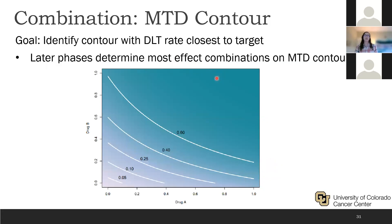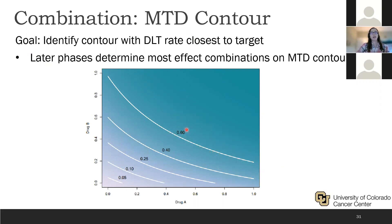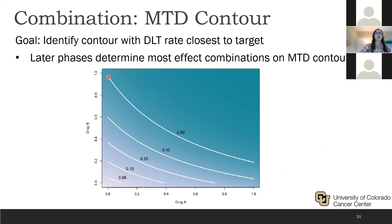Bringing this back to the topic at hand, the MTD contour is a very similar concept. The idea is to identify the contour — the combination of drug A and drug B — with the DLT rate closest to the target. On each contour there is an observed DLT rate; for example 0.4 could be achieved with a lot of drug B and a low dose of drug A, an intermediate combination, or a high dose of drug A with some drug B. The goal is to first find this contour and then later phases can look within the contour to determine which drug combinations are most effective.